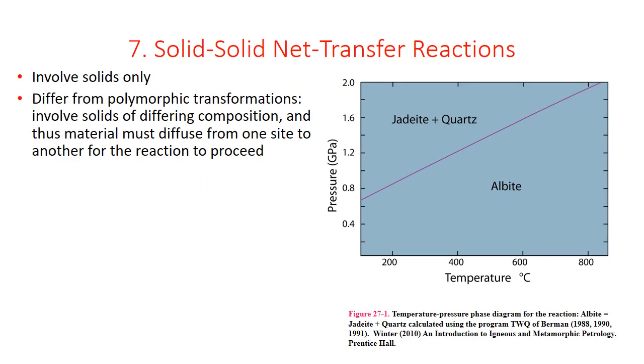Solid-solid net transfer reactions involve only solid materials of different compositions. Ions must therefore transfer between sites in the rock for the reaction to proceed. The four general steps of this type of reaction were outlined in chapter 23, but for reference are given here.